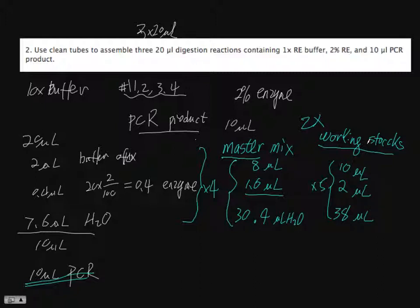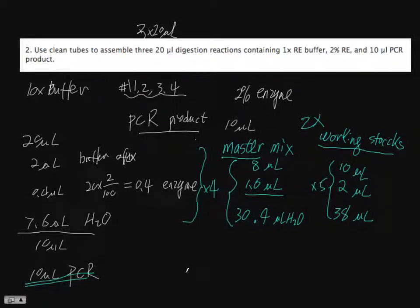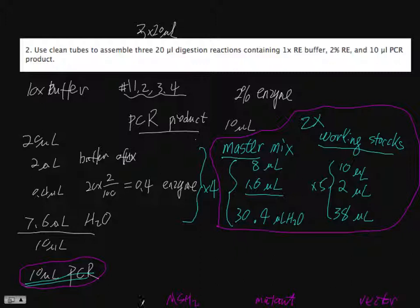It depends on how much solution we have. But the point is, after that we need to set up the reaction. So this is our working stock, 2x working stock, and that's our PCR product. We have PCR product which is MSH2 wild type and there's also a mutant. Each group has a mutant. There is a vector control product.